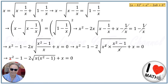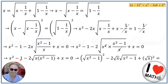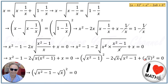We rewrite this equation by replacing x squared minus 1 with the square root of (x squared minus 1) to the power of 2. We write x as square root of x to the power of 2, and separate the terms accordingly. Now we can recognize the pattern a squared minus 2ab plus b squared, where a is square root of (x squared minus 1) and b is square root of x, so we can write this as (a minus b) squared.